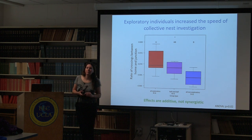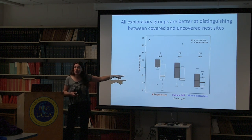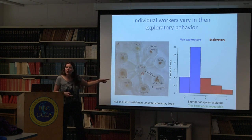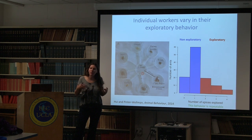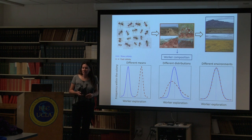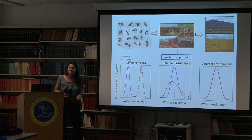Audience question: Why was this experiment done with groups while the other was done with one ant at a time? Response: We first tested individual behavior to determine each individual's exploratory type, and then created groups combining either all exploratory or a mix of exploratory and non-exploratory individuals. This study suggests that the mean behavior of the colony determines whether they are fast or slow at finding a nest and whether they can distinguish covered from uncovered nests.